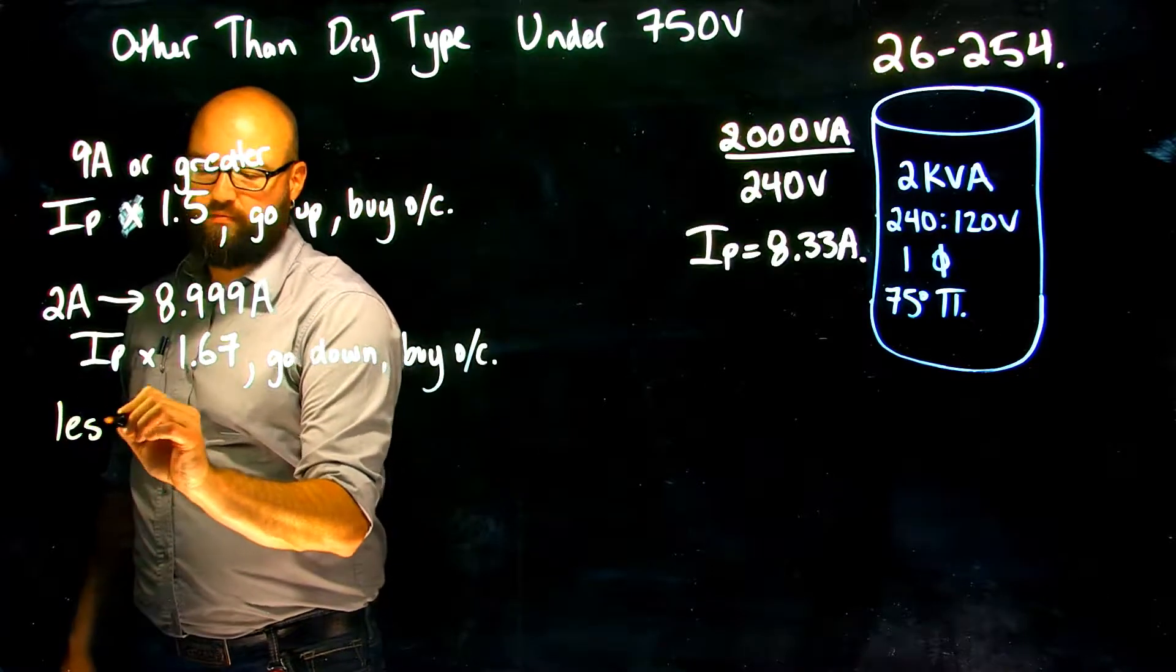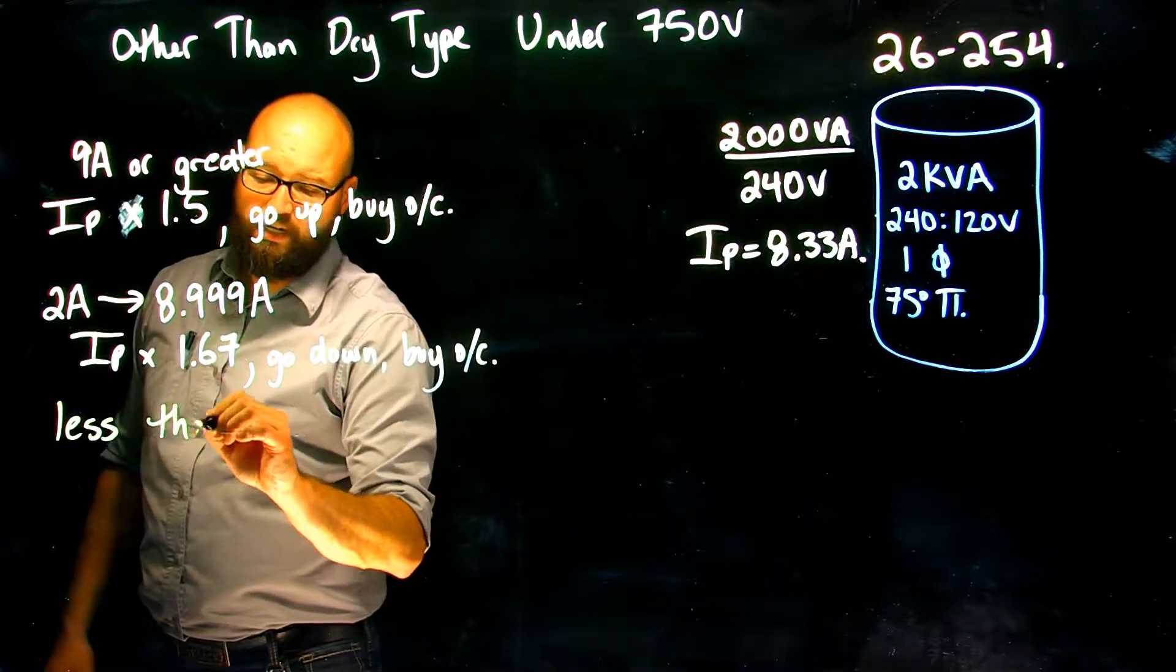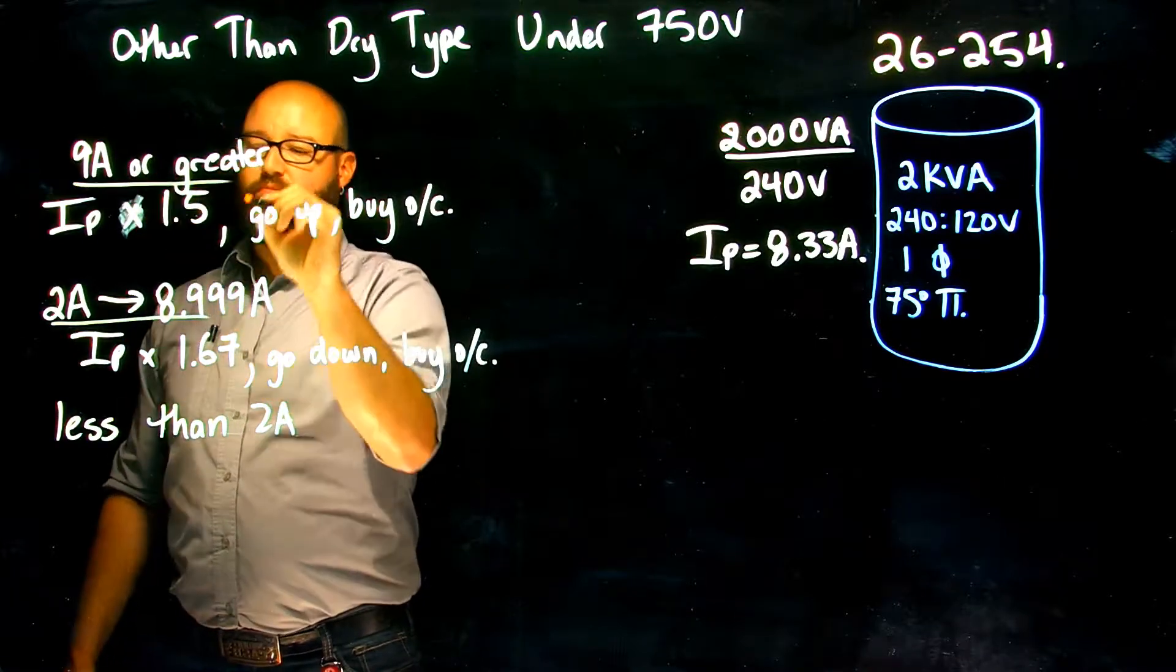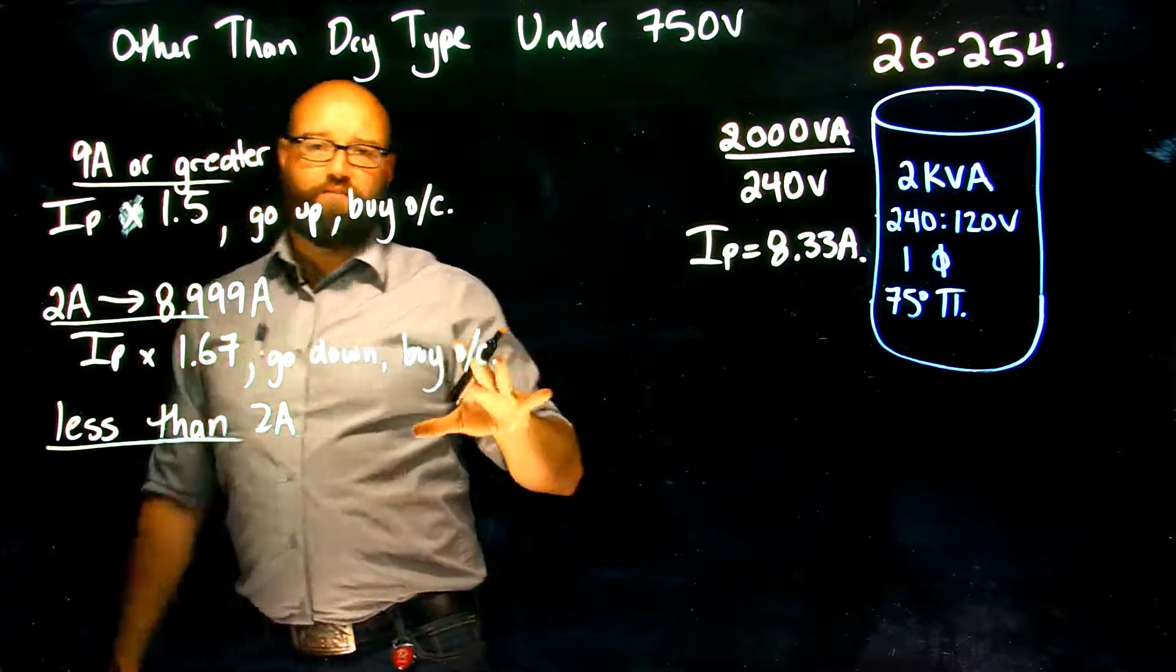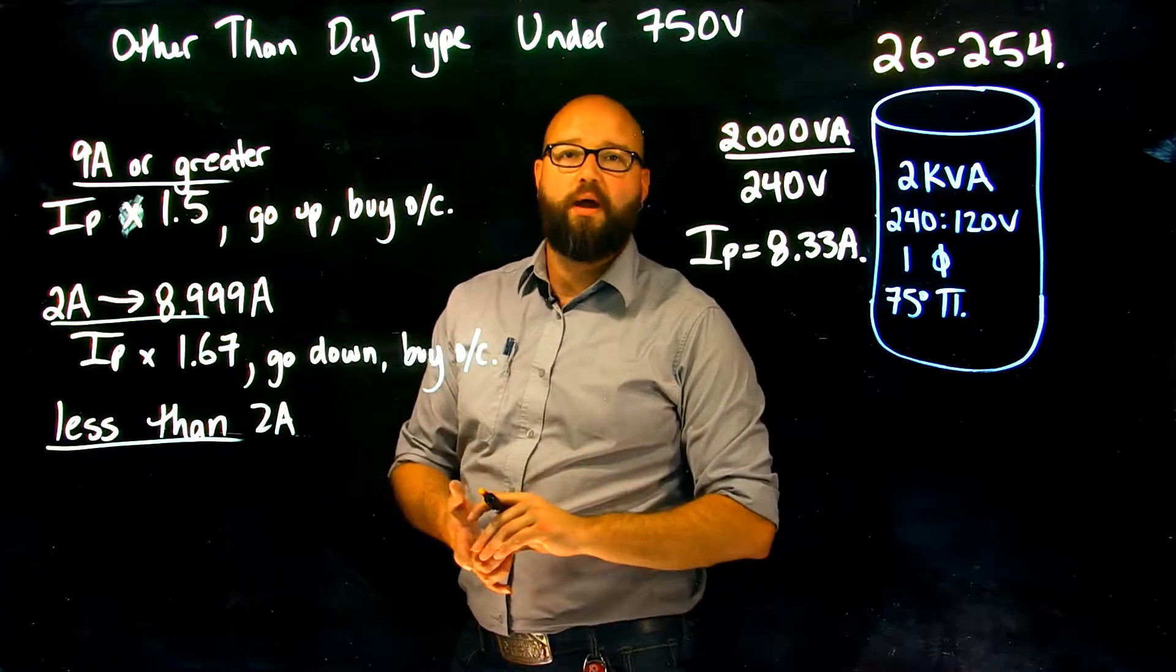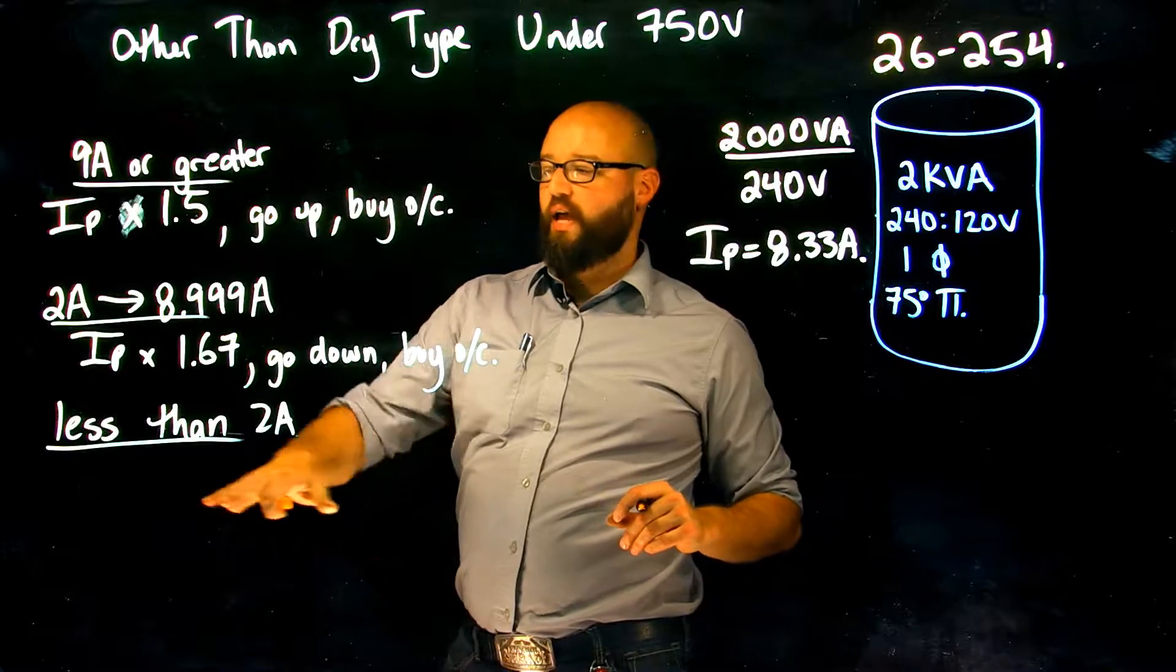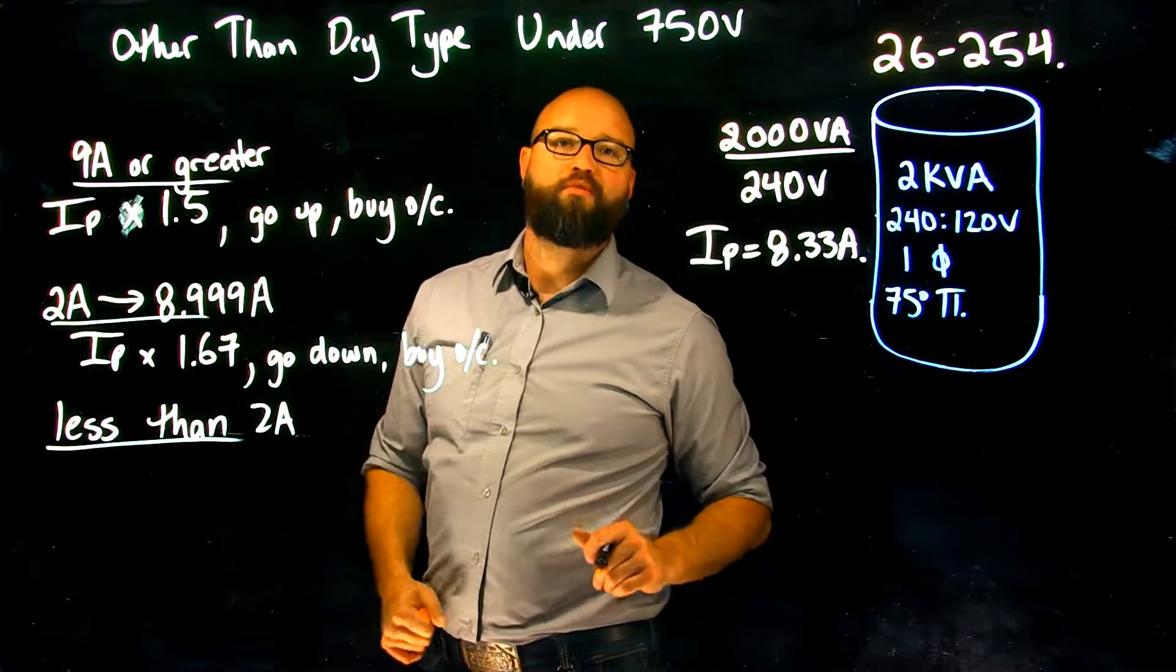Finally, if it's less than 2 amps, if my rated primary is less than 2 amps, if I read on it tells me I am going to use 300 percent as my multiplier. I cannot have an overcurrent rated or set at more than 300 percent of that rated primary current.